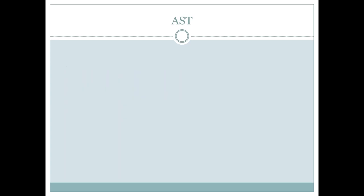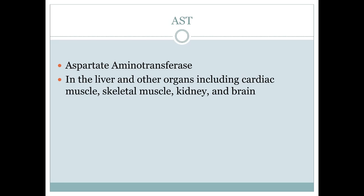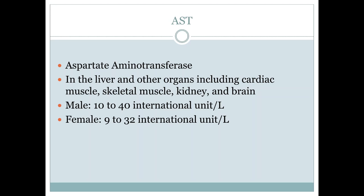The next liver enzyme test is called AST — aspartate aminotransferase. This one is made in the liver but also in other areas of the body including the heart muscle, regular muscles that help us move, kidney, and brain. So if you see an elevation of AST without ALT, you might consider that the enzyme is coming from other areas in the body. The normal range for males is 10 to 40 and for females 9 to 32, but we do prefer lower numbers — 30 for a male and 20 for a female — to be considered normal.